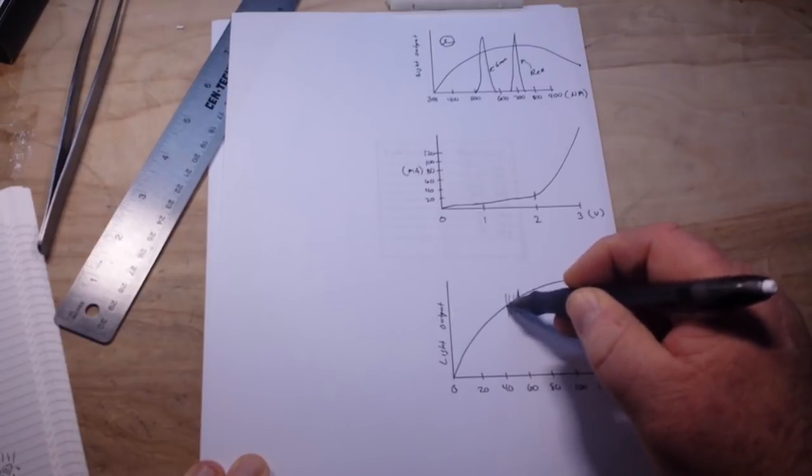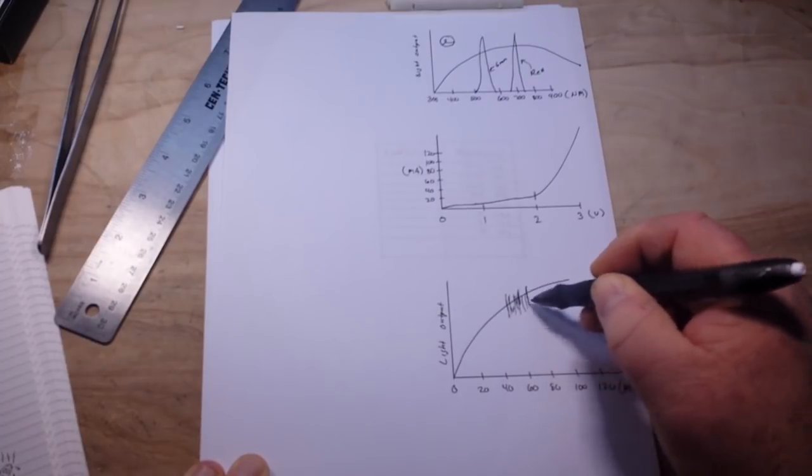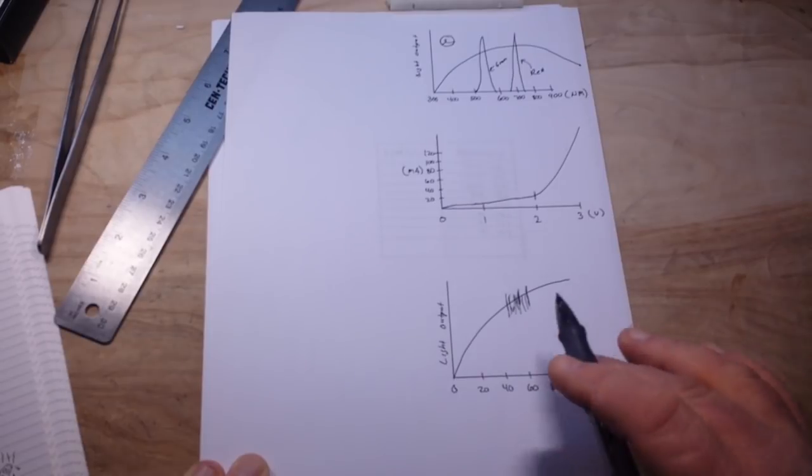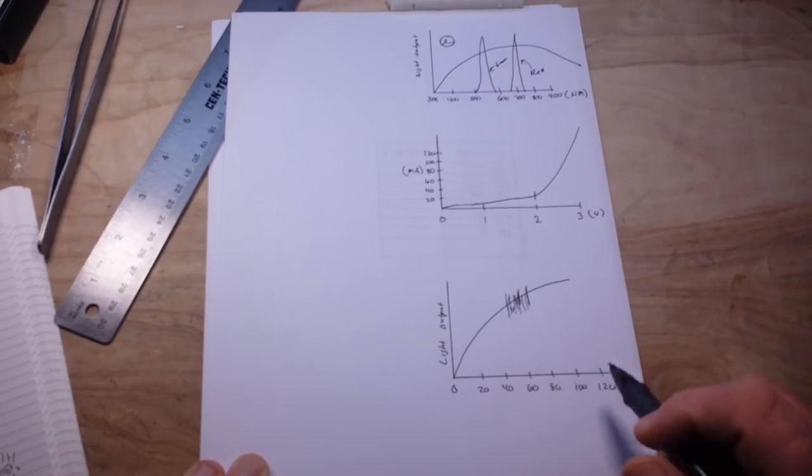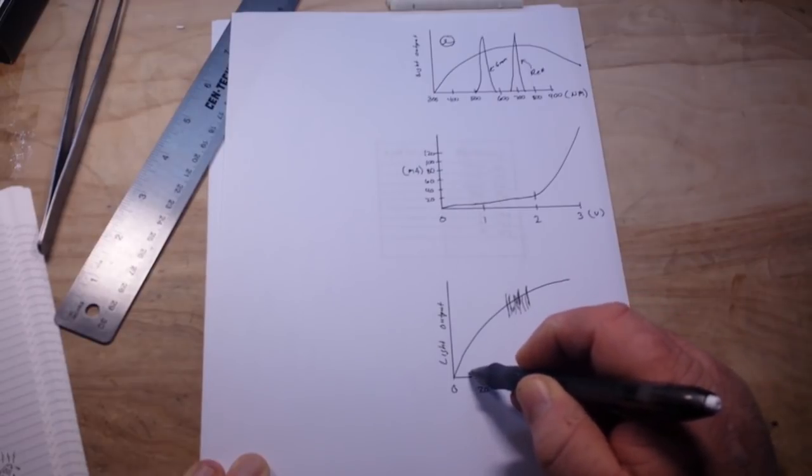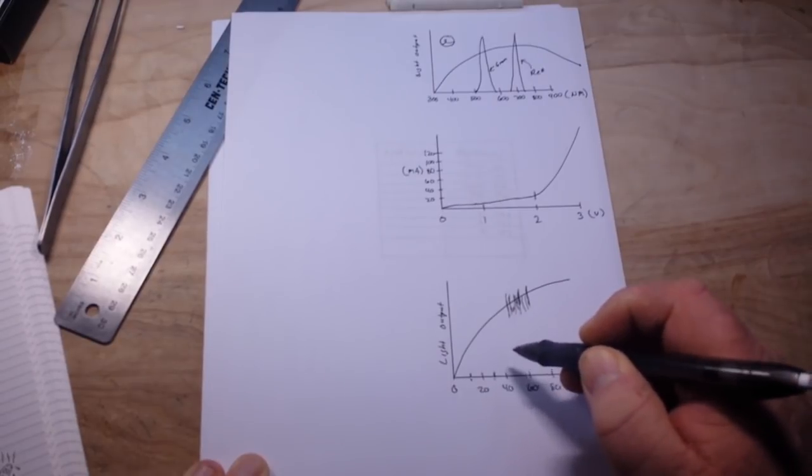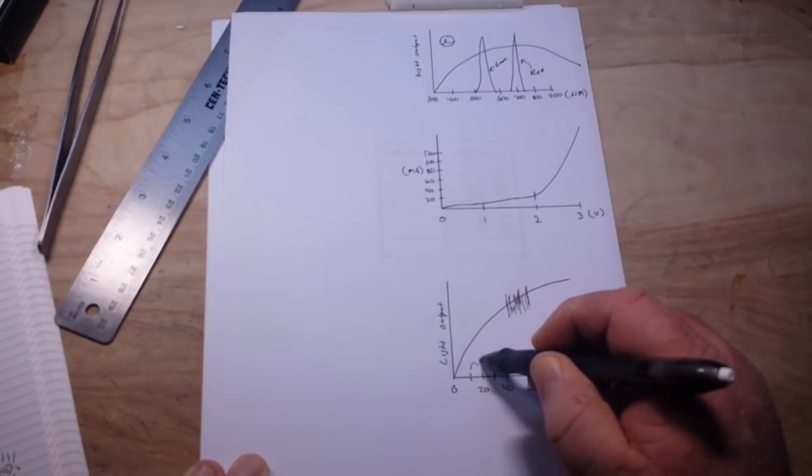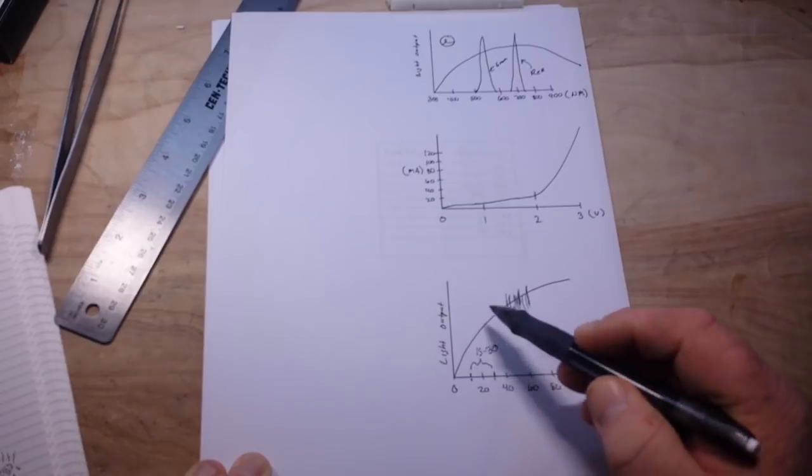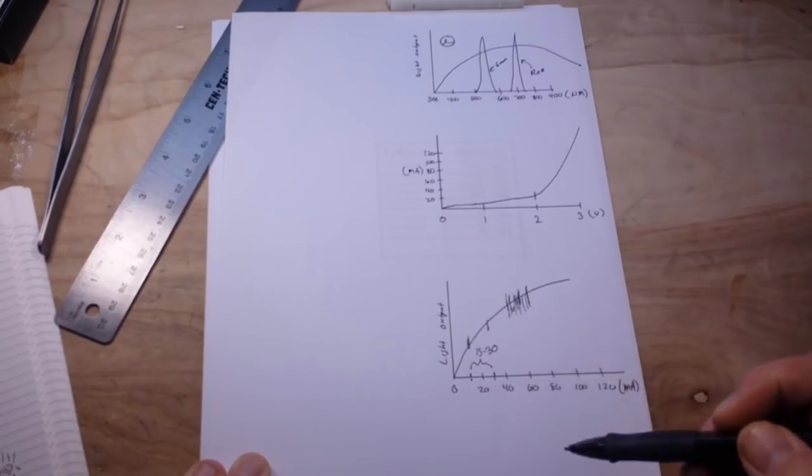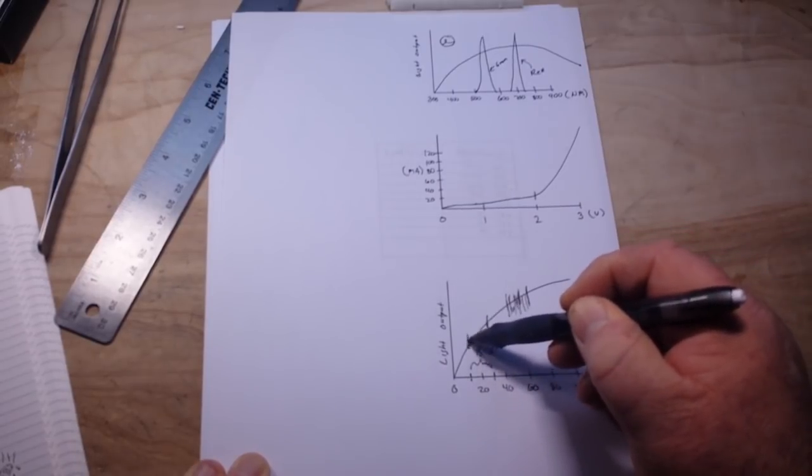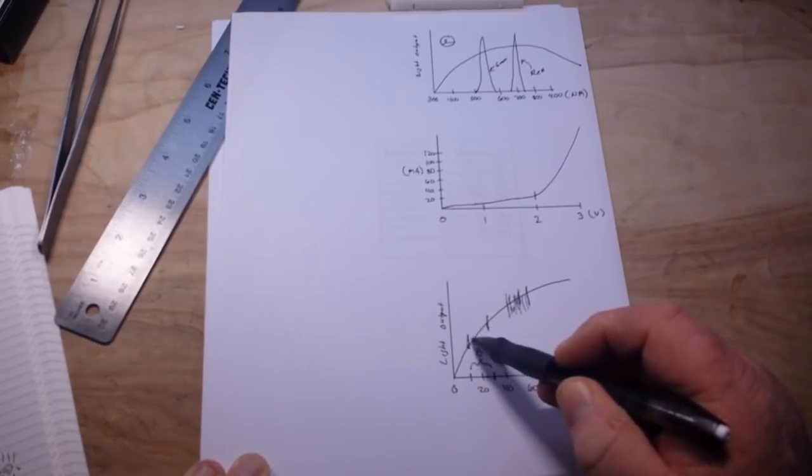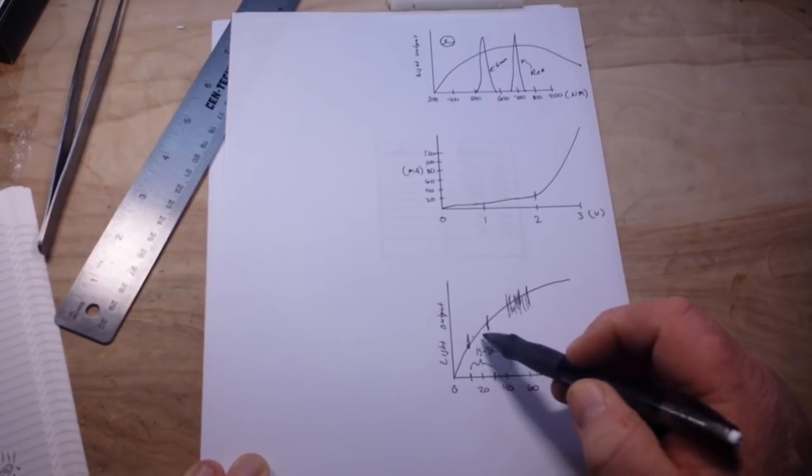But when you cross this plane, somewhere in this area, in the 40 to 70 milliamp range, you're going to start to overheat the LEDs and they're not going to be happy. So right around in, I'm going to say the 15 to 30 milliamp range is where you want. That's the sweet spot. That's where you want to drive the LEDs.